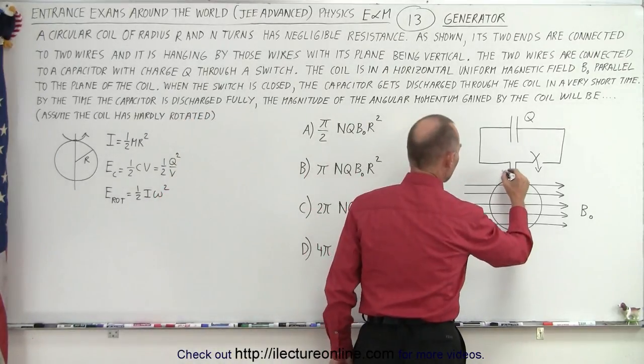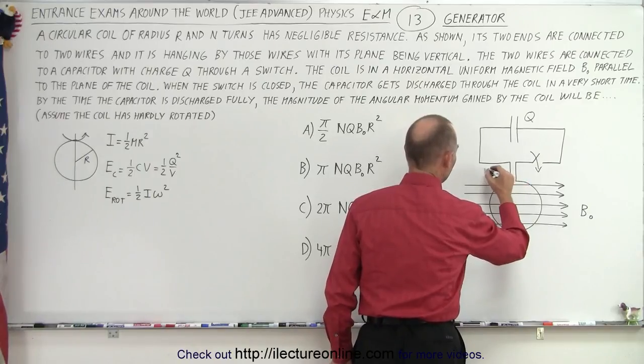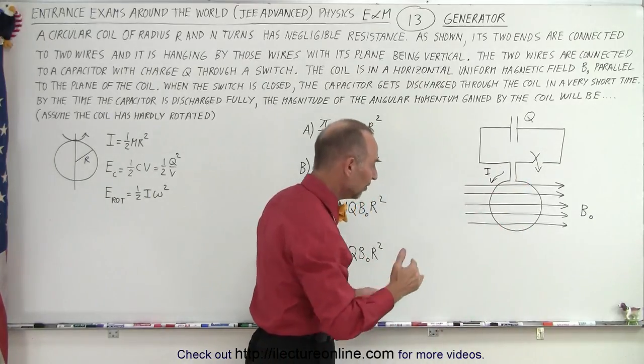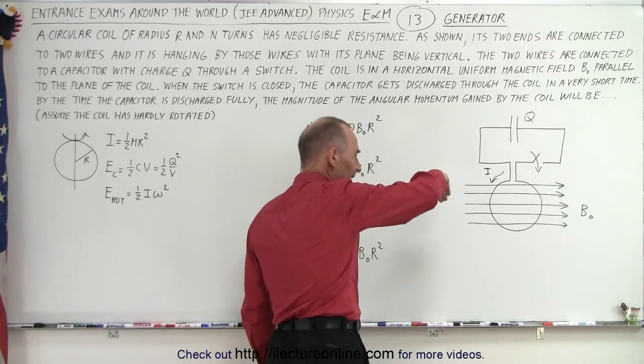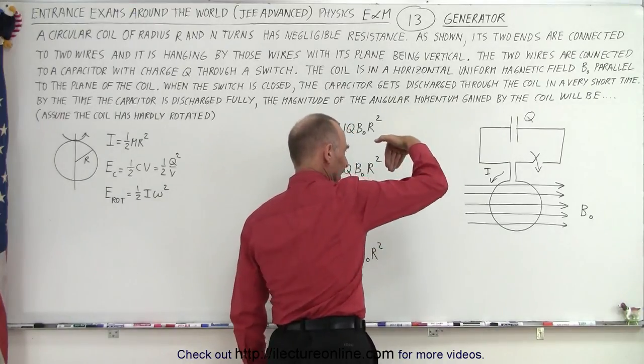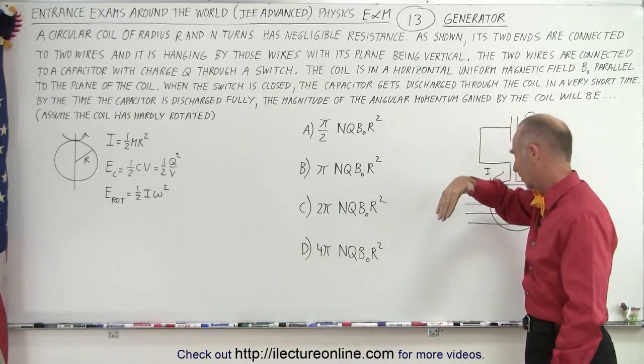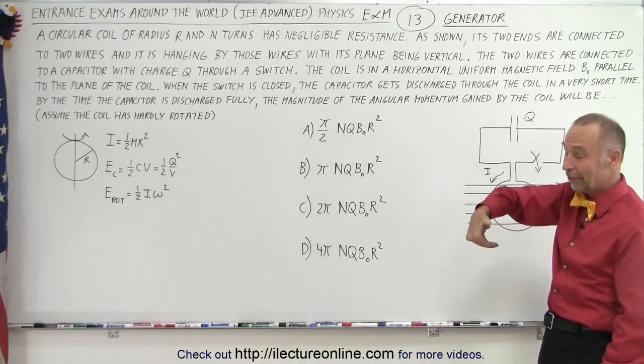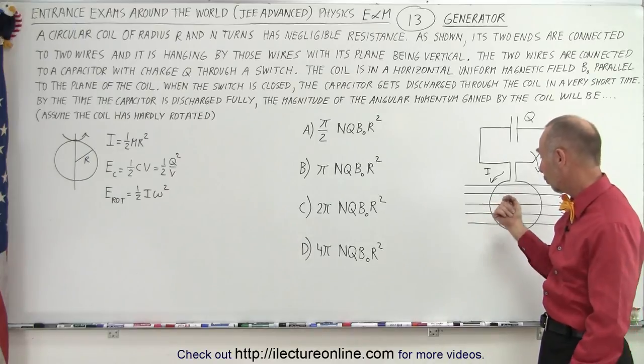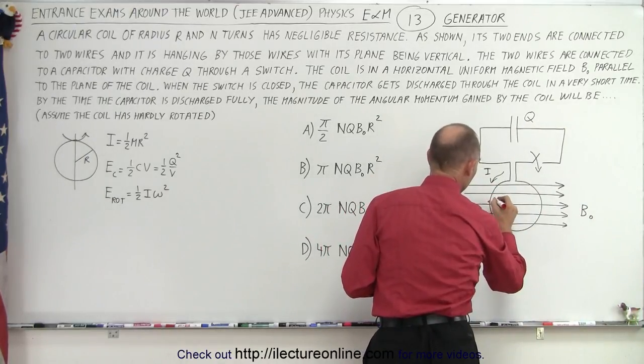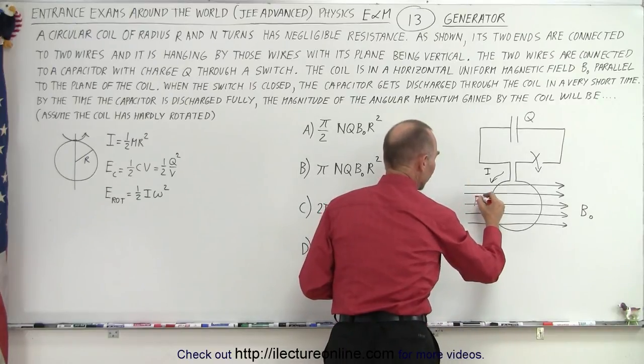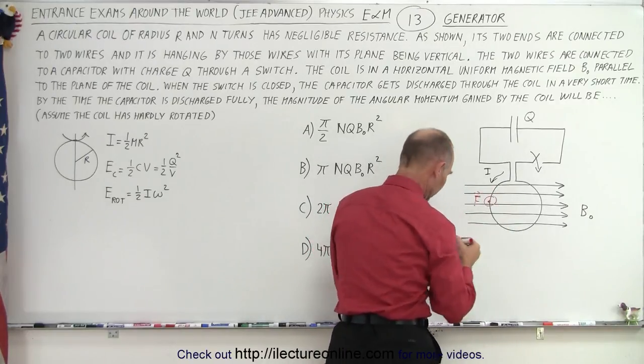Let's assume for a moment that the current goes in this direction. What happens is, take your fingers, right hand rule, bring your fingers down, then curl your fingers into direction of the magnetic field. Notice there will be a force in this direction, a force will come out of the board. The force on this side will be out of the board.